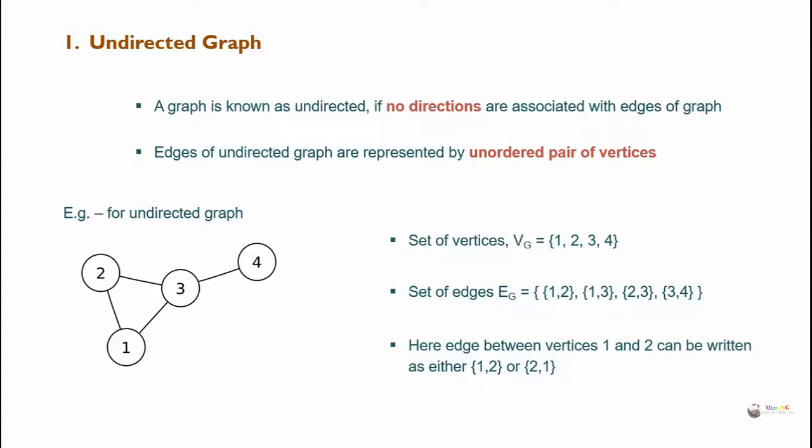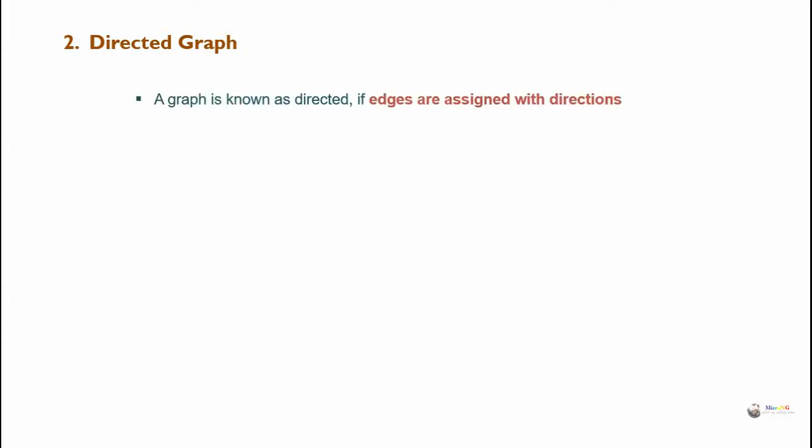Second, directed graph. A graph is known as directed if edges are assigned with directions. Edges of a directed graph are represented by ordered pairs of vertices.